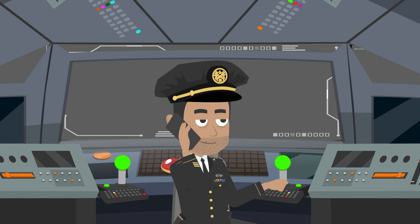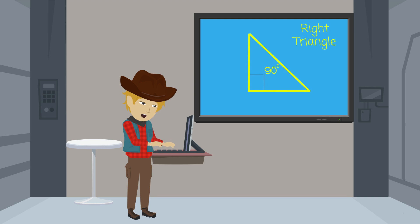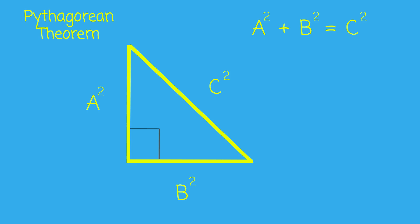I knew I could count on you. The Pythagorean theorem is a formula for right triangles, written as A squared plus B squared equals C squared. And that refers to each side of the triangle.